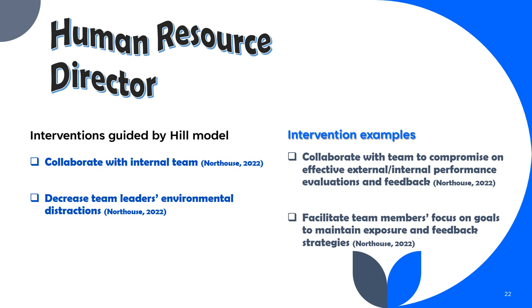Guided by the Hill model, the human resource director should collaborate with the internal team and decrease team leaders' environmental distractions, such as collaborating with the team to compromise on effective external and internal performance evaluations and feedback, and facilitate team members' focus on goals to maintain exposure and feedback strategies. The human resource director would be a significant support and resource for both the internal and external team, assisting with modifying evaluations for internal and external leadership.